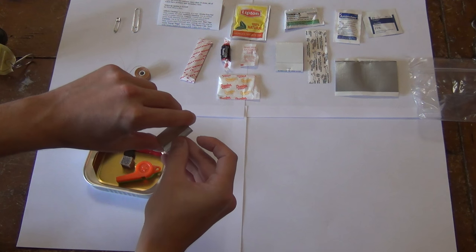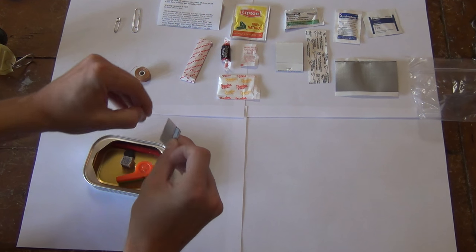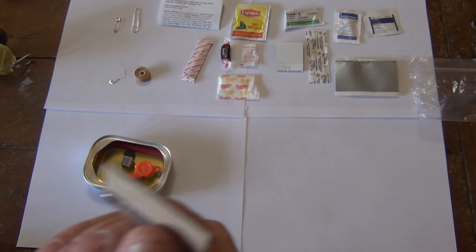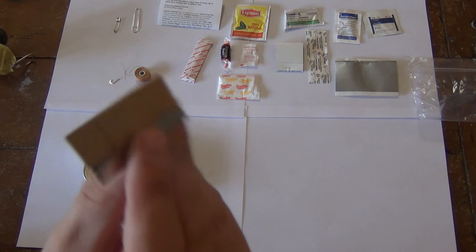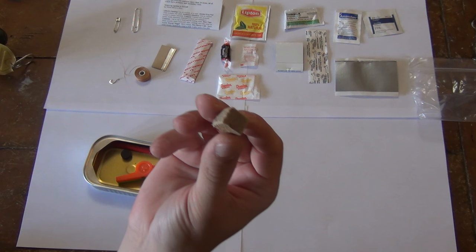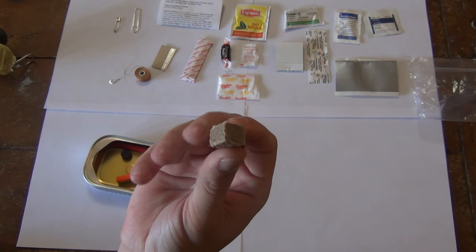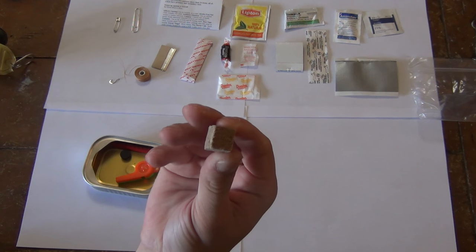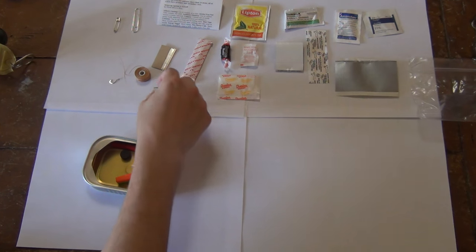Little razor. Should be able to take that out. Well, no real point to take it out, but little flat razor. Little piece of fire starter tinder. You can cut this up with your razor and have a little bit of tinder to start a fire. You don't have to probably use the whole thing at once.